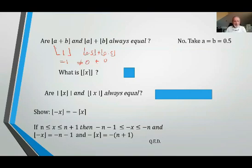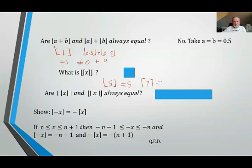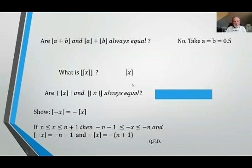This property is simple to verify: the ceiling function of x is an integer, and the floor function of an integer is the integer itself. So the floor of the ceiling of x equals the ceiling of x. For example, the floor of 5 is 5 and the ceiling of 7 is 7. So the answer here is the ceiling function of x.